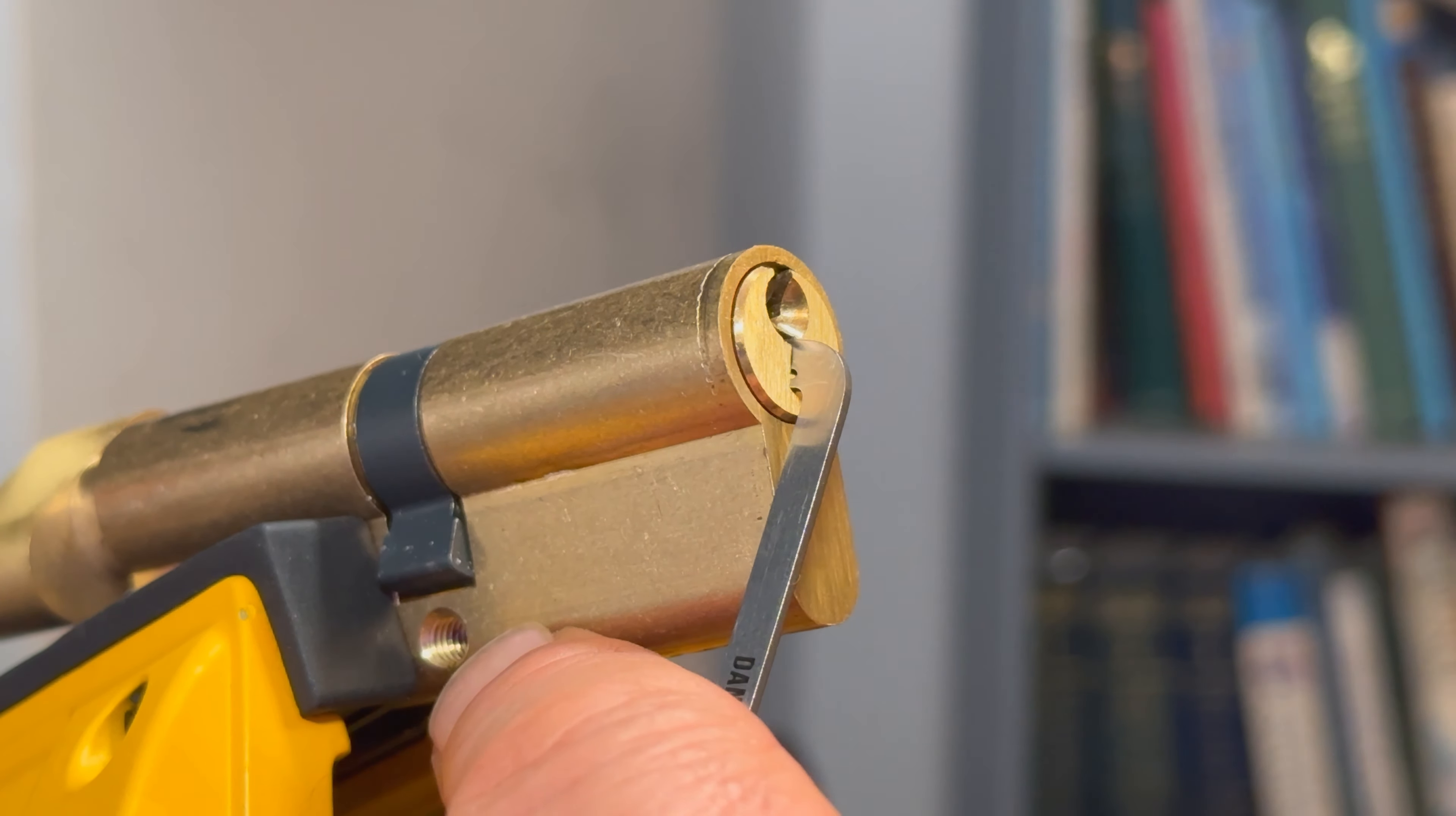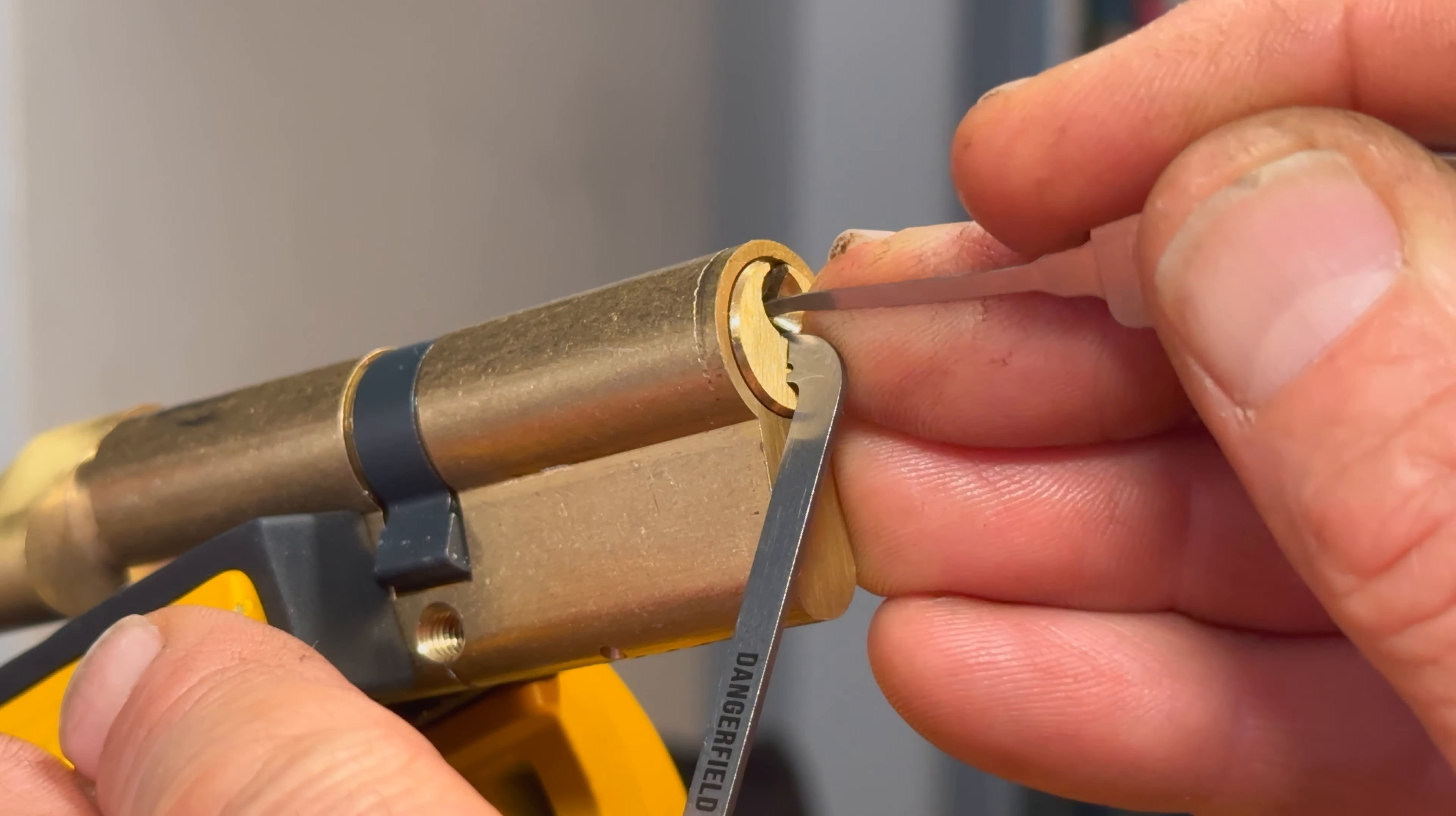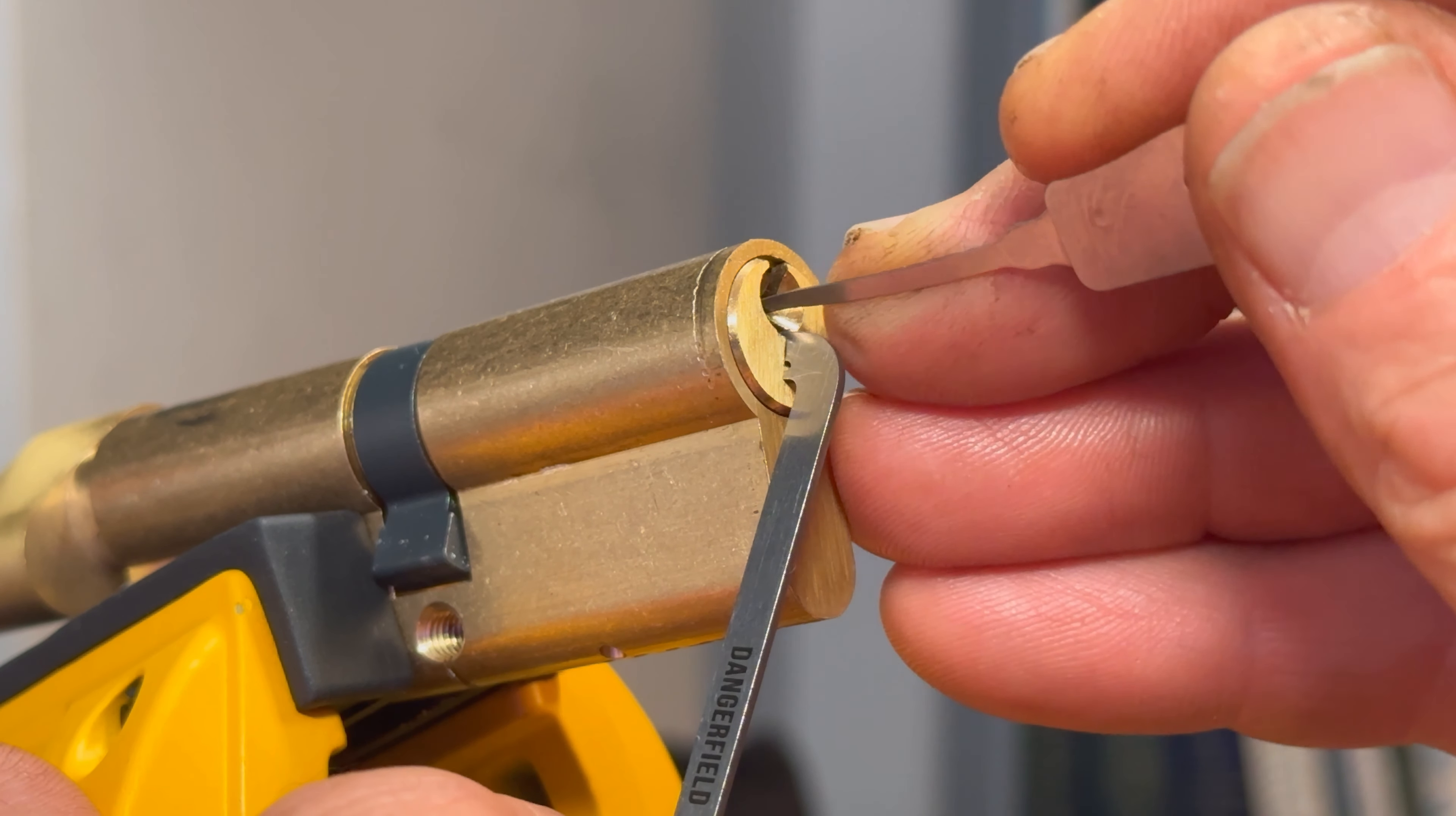Okay we've got a little bit of rotation on the core now, a little bit of a false set on there. Not a massive one but it's encouraging that it's starting to react to being picked. Okay they've got an even deeper false set now off pin one. So we're now definitely in spool territory.